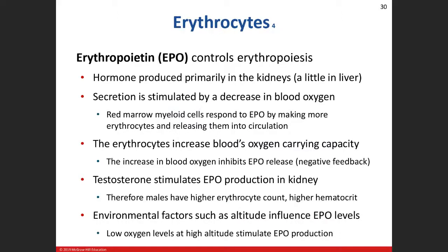Erythropoietin, or EPO, is a hormone generated primarily by the kidneys — the liver offers some, but primarily it's the kidneys. It gets produced when you have low blood oxygen levels. Low blood oxygen is the stimulus; receptors in the kidney monitor that and start producing erythropoietin, which then stimulates the red bone marrow to increase the process of erythropoiesis.